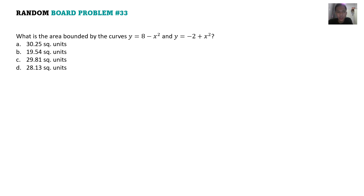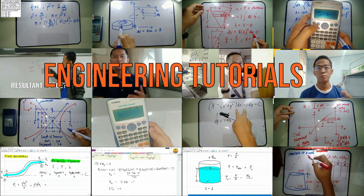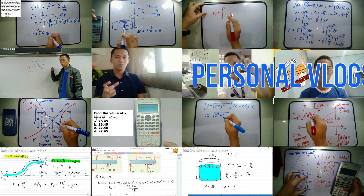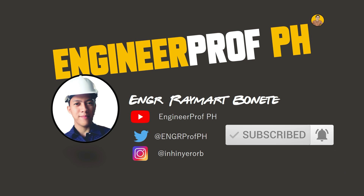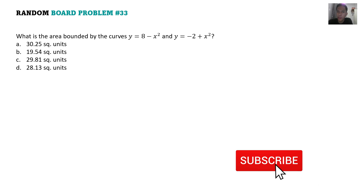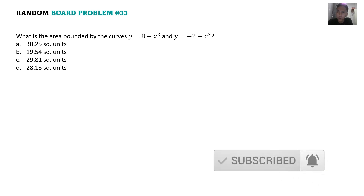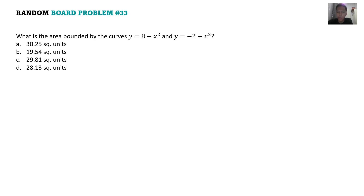Hi guys, welcome back to my channel. In this video, we're going to continue our discussion on random board exam problems. This is board exam problem number 33. If you're new to this channel, just click the subscribe button and the notification bell so that you'll get notified on our future educational videos such as this. Here is our problem: what is the area bounded by the curves y equals 8 minus x squared and y equals negative 2 plus x squared? We're going to solve this using your calculator and of course using the manual method. This is part of integral calculus — area by integration.